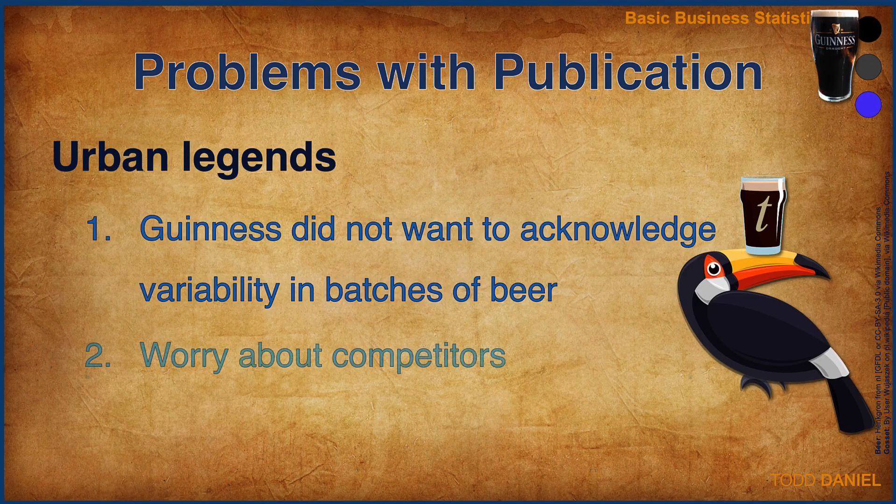Another urban legend speculates that Guinness worried that its competitors would use Gossett's work to improve their own products. This is also highly unlikely, because as Gossett himself argued, these tables were useful for statisticians but contained no information that could be of use for brewing beer.